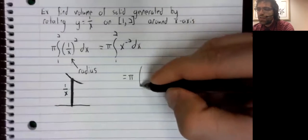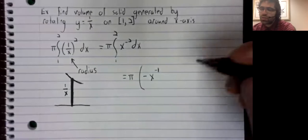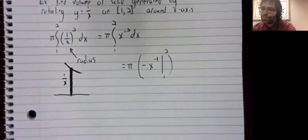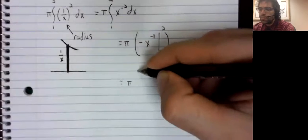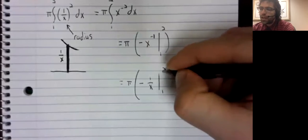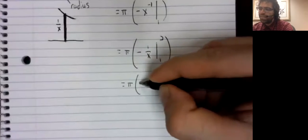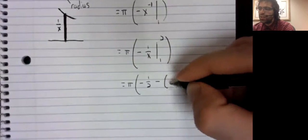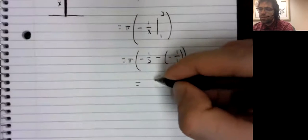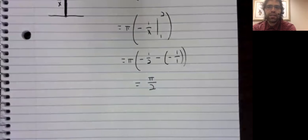The antiderivative of x to the negative second is negative x to the negative first. We are evaluating from 1 to 2. Negative x to the negative first is negative 1 divided by x. So negative 1 half minus negative 1 divided by 1. That makes pi divided by 2.